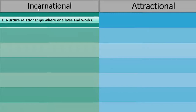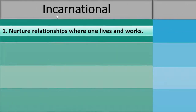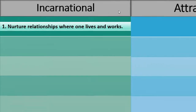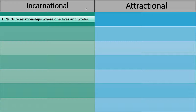Number one for incarnational: nurture relationships where one lives and works. This posture seeks to do life together with others in the context of where the majority of life is spent, mainly at home or work. As you share common spaces with others, you nurture relationships and build a pathway to authentic community. This works well in a condo or apartment building.